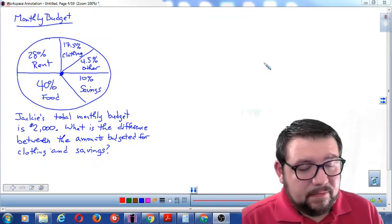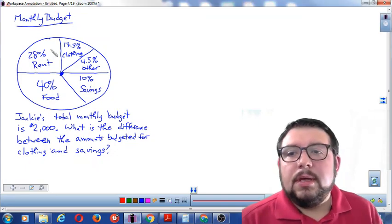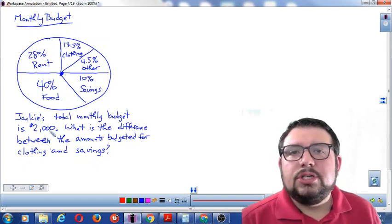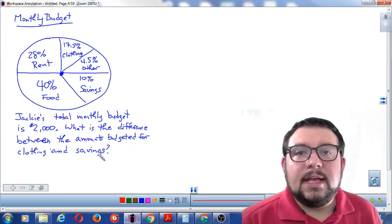Alright, so today we're looking at a problem involving monthly budget. What we see in the problem is a pie chart for the budget, and it says Jackie's total monthly budget is two thousand dollars. What is the difference between the amounts budgeted for clothing and savings?